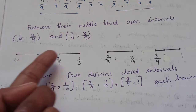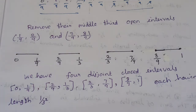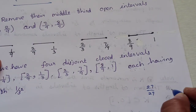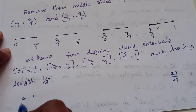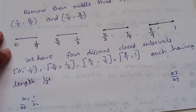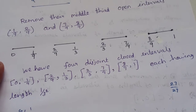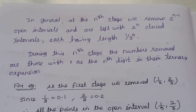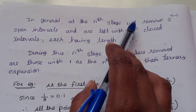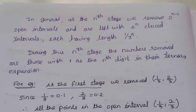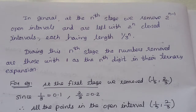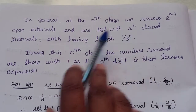In the first stage, we remove one open interval. In the second stage, we remove two open intervals. In general, at the nth stage, we remove 2^(n-1) open intervals, each of length 1/3^n.